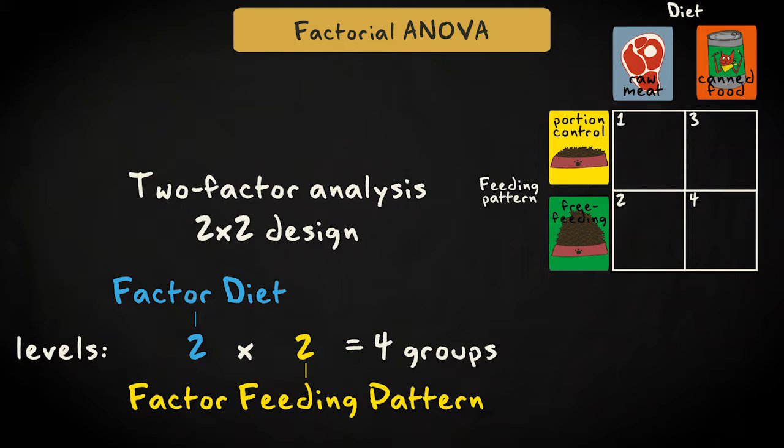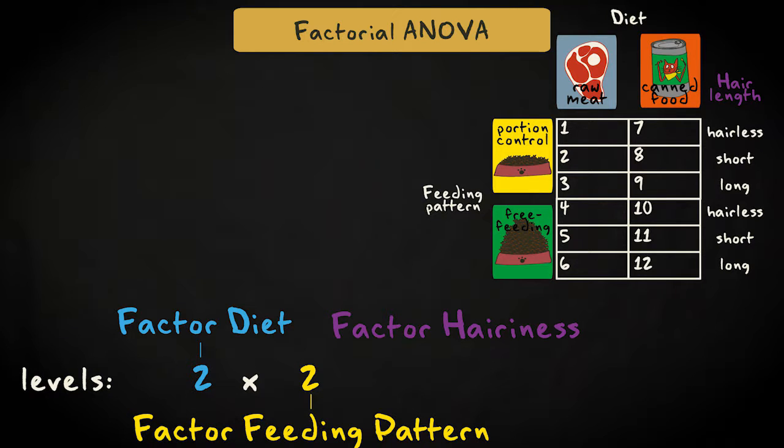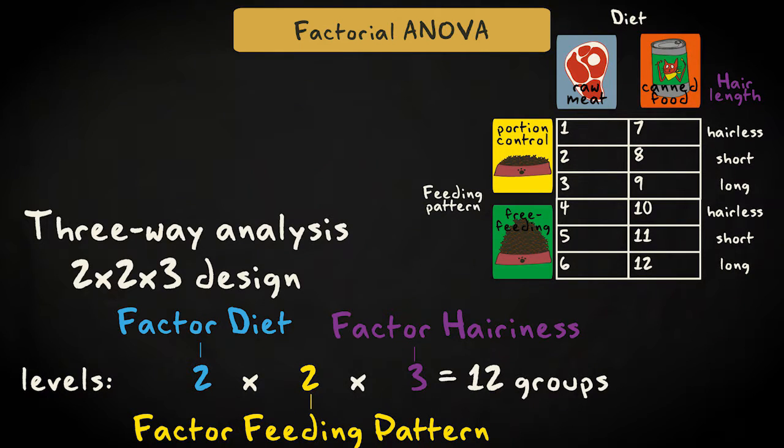The number of factors and levels can be larger. For example, if we include the factor hairiness, with the levels hairless, short hair, and long hair, we would have a three-way analysis, with a two by two by three design, and two times two times three equals twelve groups or cells.